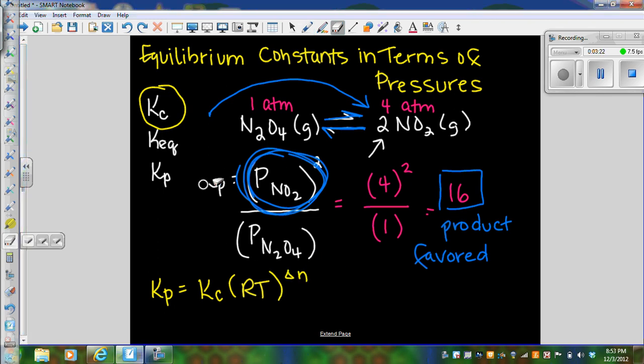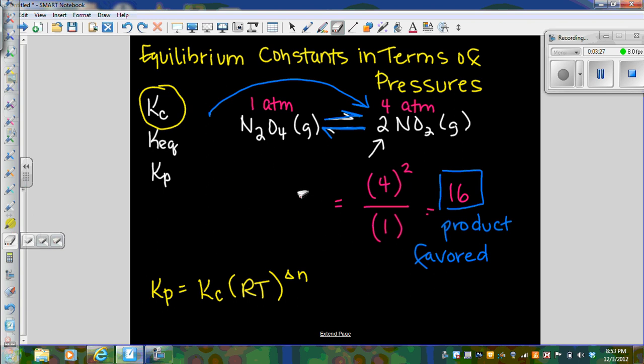But the equation is Kp equals Kc times the quantity RT raised to the delta n. Okay, I want to erase some of this because I want to be able to talk about what the different variables in the equation are. This is our equilibrium constant in terms of pressure. This is our equilibrium constant in terms of concentration.